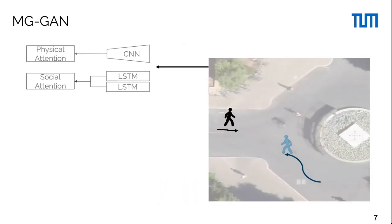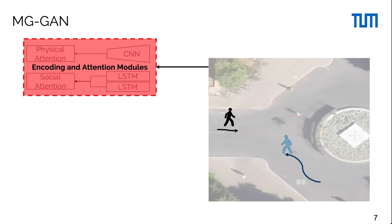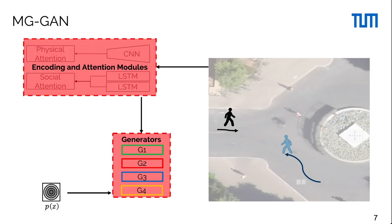For a given scene, the model encodes the observation and computes physical and social attention. Conditioned on the features and the latent distribution, we have a set of generators where each generator learns a specific distribution.